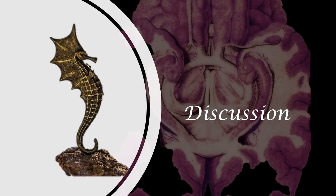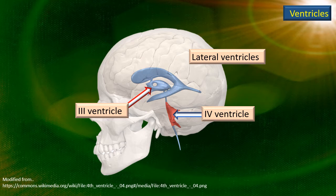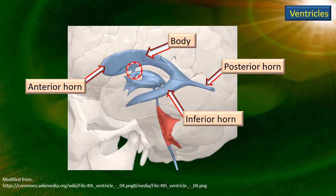Discussion. The lateral ventricles have been highlighted in this slide. The third ventricle and the fourth ventricle are also shown — but watch carefully the position, shape, size, and orientation of the lateral ventricles. The lateral ventricle has a body shown by the topmost arrow, an anterior horn, a posterior horn, and an inferior horn.